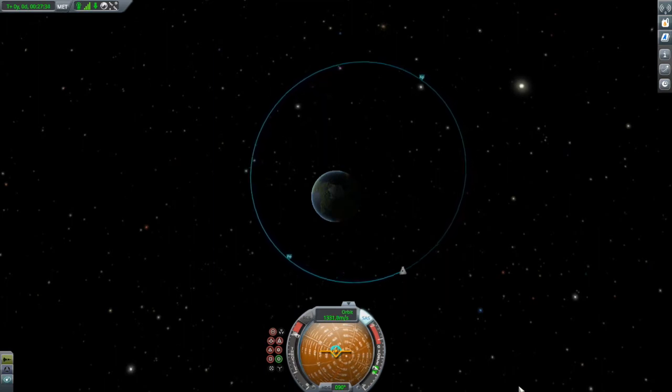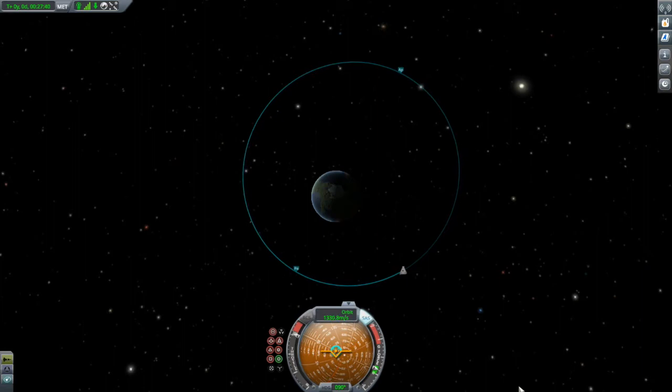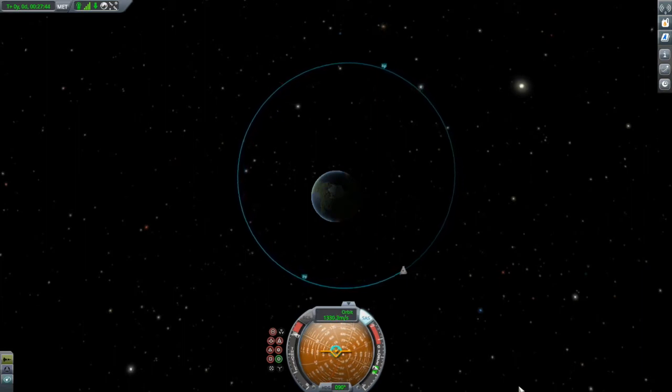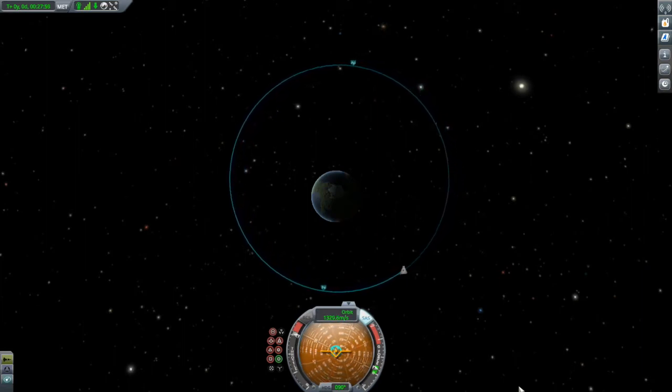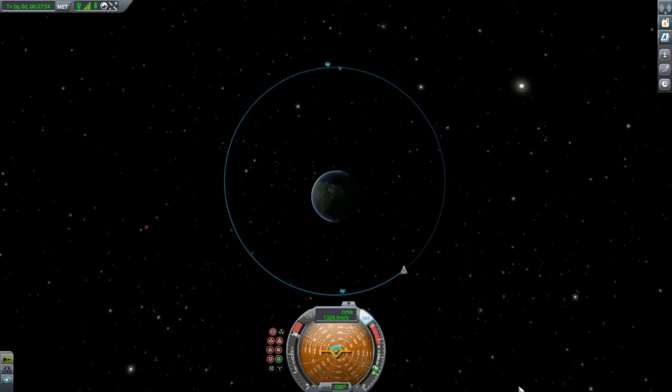Since normal and radial burns aren't about changing the energy in the orbit, the kinetic energy formula we talked about last episode doesn't enter into the discussion. Instead, we need to talk about vectors.